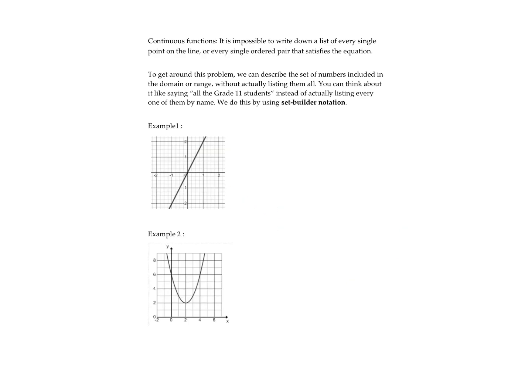A continuous function is a little more tricky because we can't list every single point. It's impossible to write down a list because there are an infinite number of points on the line. So we're going to use set builder notation, which allows you to list all the values possible in the domain and range. Think of it as saying 'all grade 11 students' rather than listing every single one.